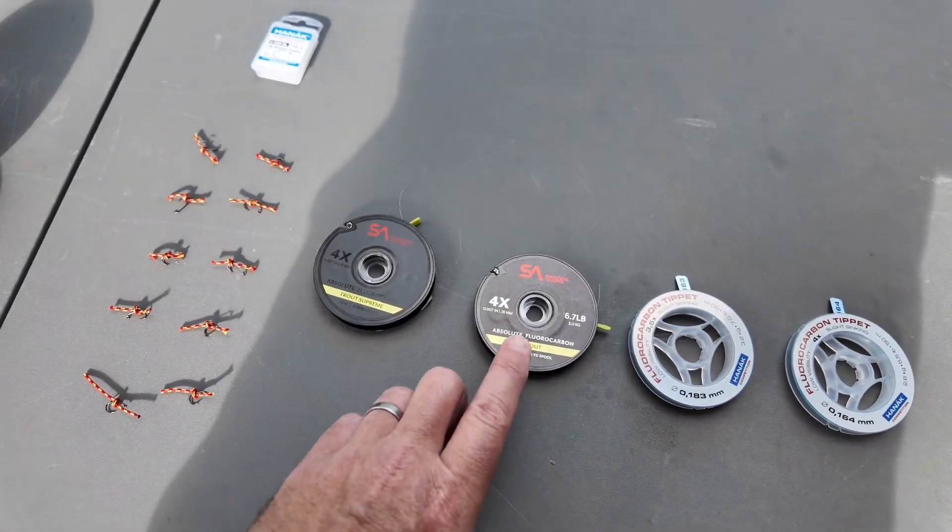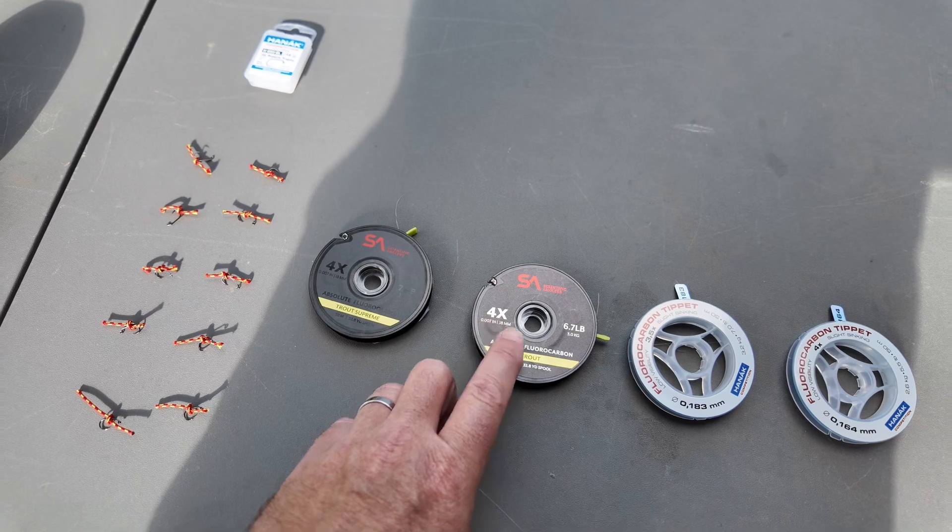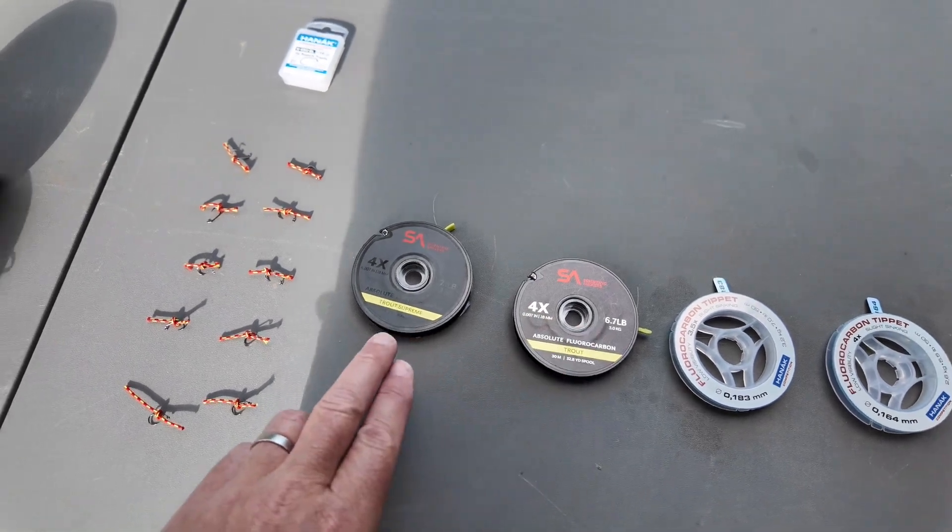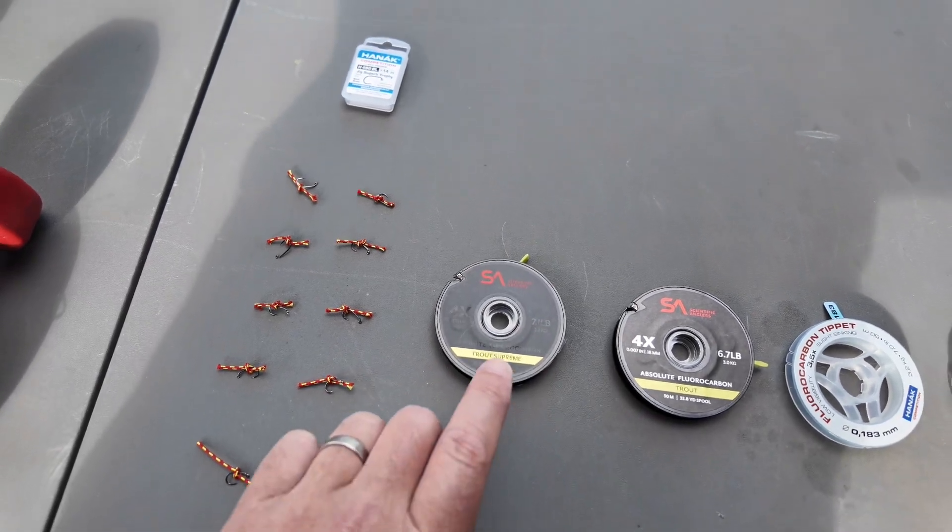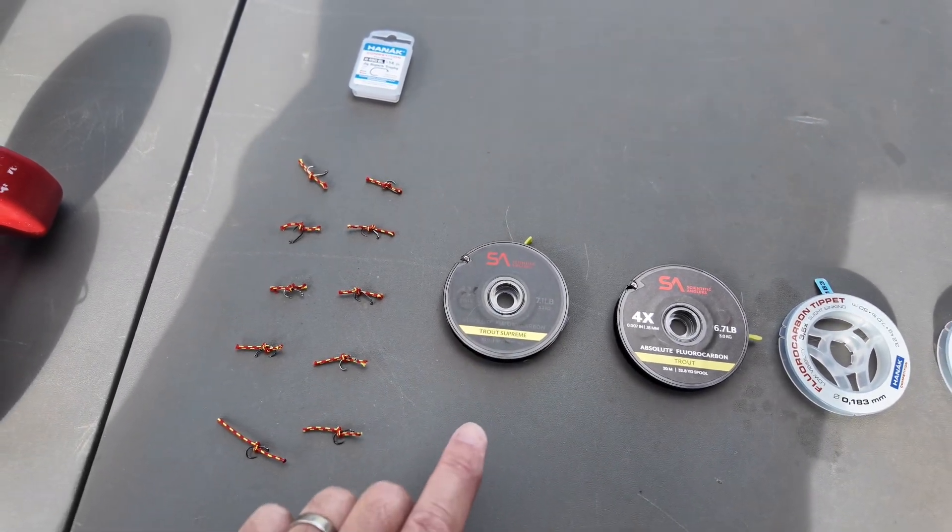And then in the previous test I had this absolute fluorocarbon trout 4X by SA, but I see they've got an absolute fluorocarbon trout supreme 4X 7.1 pounds. So I'm going to add that in to the test.